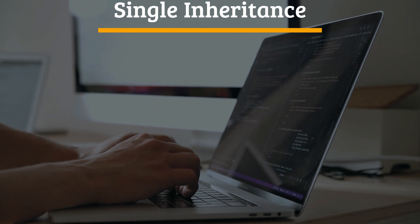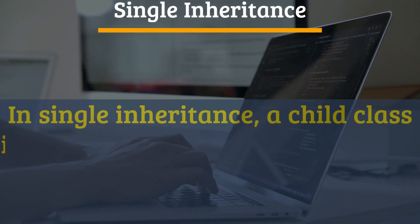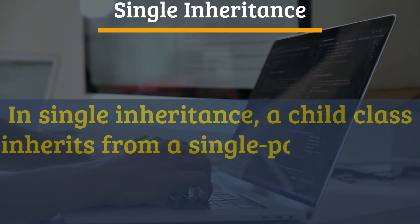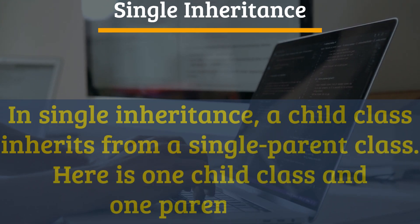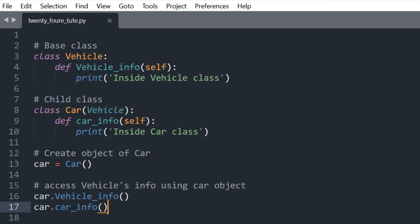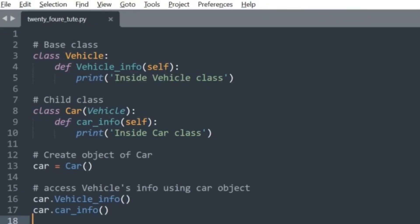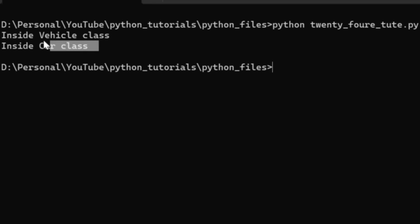Single inheritance: In single inheritance, a child class inherits from a single parent class — there is one child class and one parent class. In this example, Vehicle is the base class or parent class and Car is the child class or derived class. If you run this Python file, you will see the same output as shown on the screen.